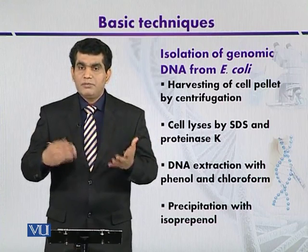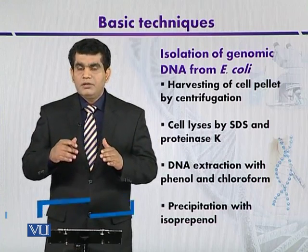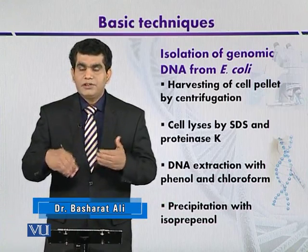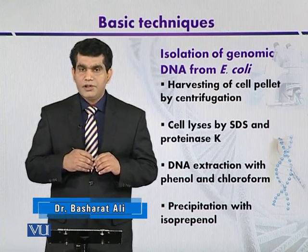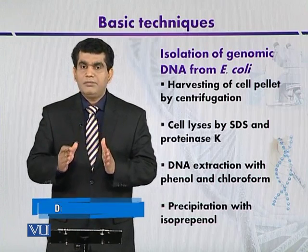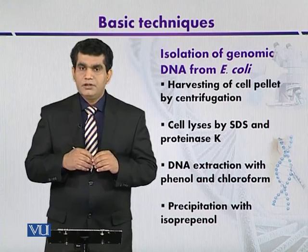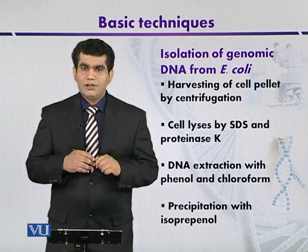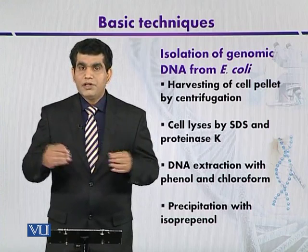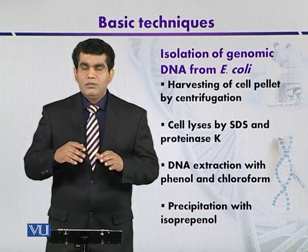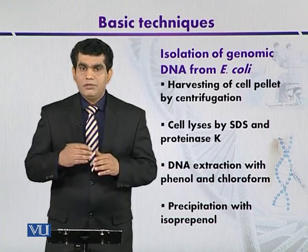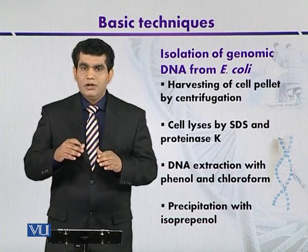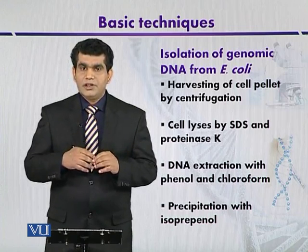After 24 hours, a visible mass of E. coli cells or any microbial cells will be produced. The cells will then be separated or harvested by centrifugation. Once the cell pellet or cell biomass is separated, it will further proceed for the isolation of genomic DNA. Different types of chemical reagents are available by which we can lyse and disintegrate the cells.